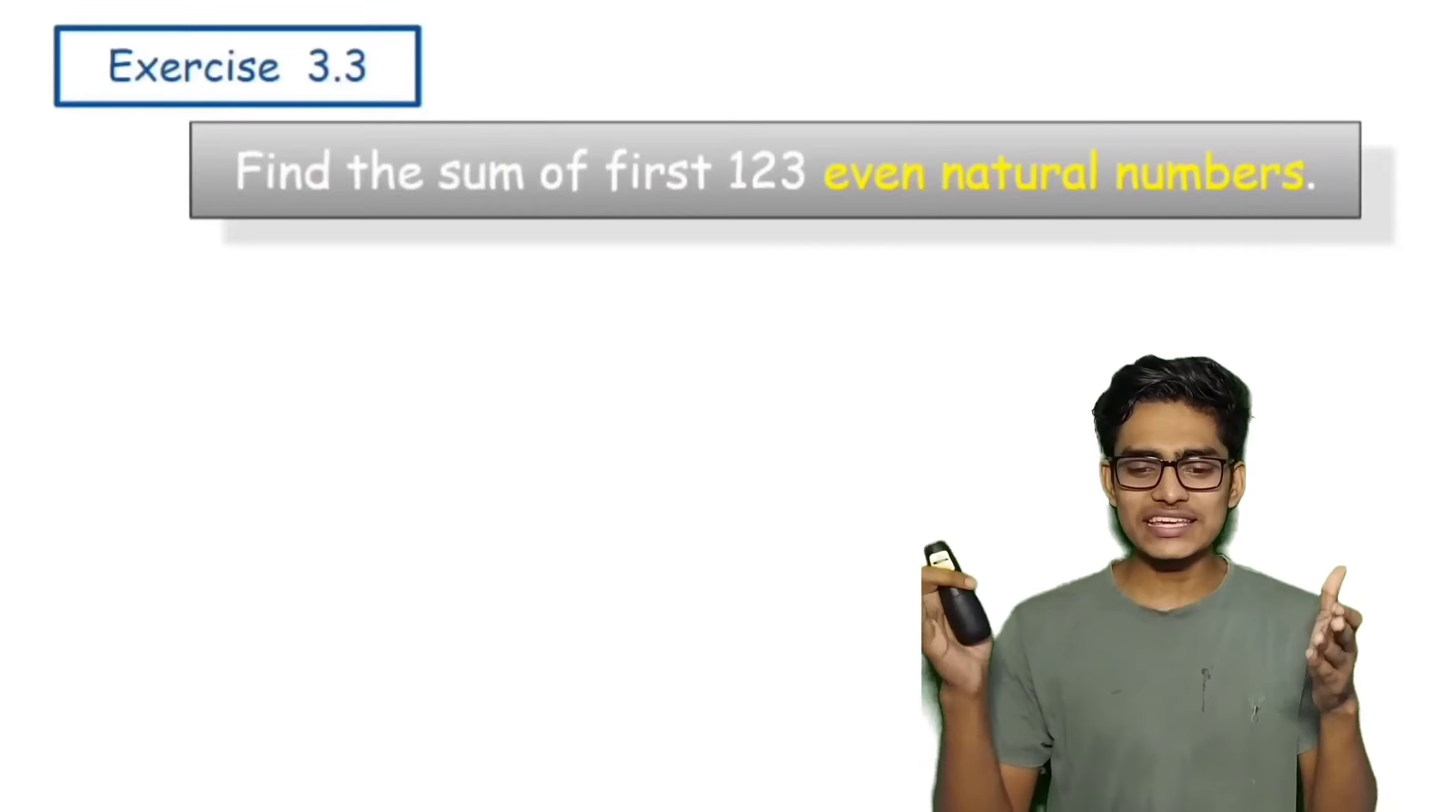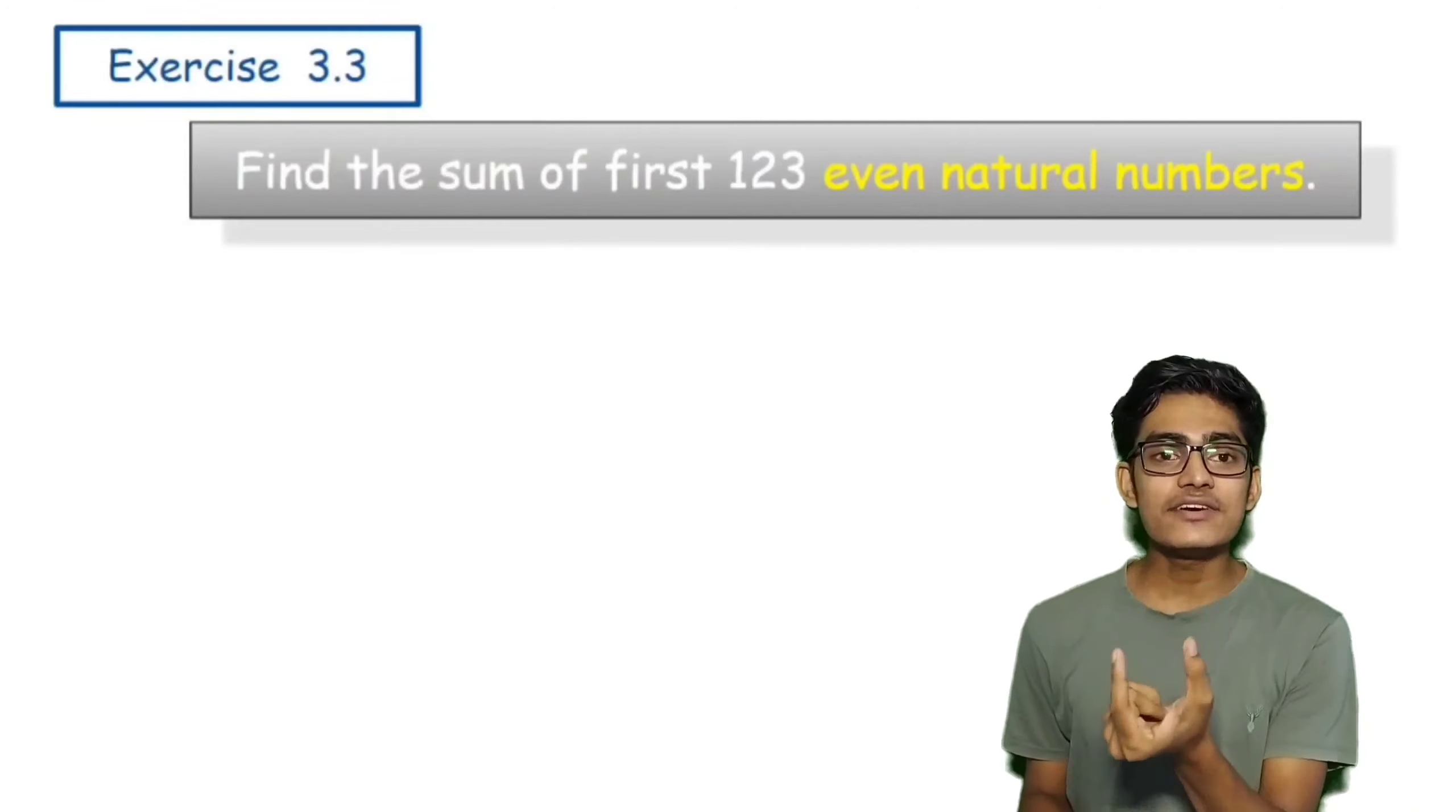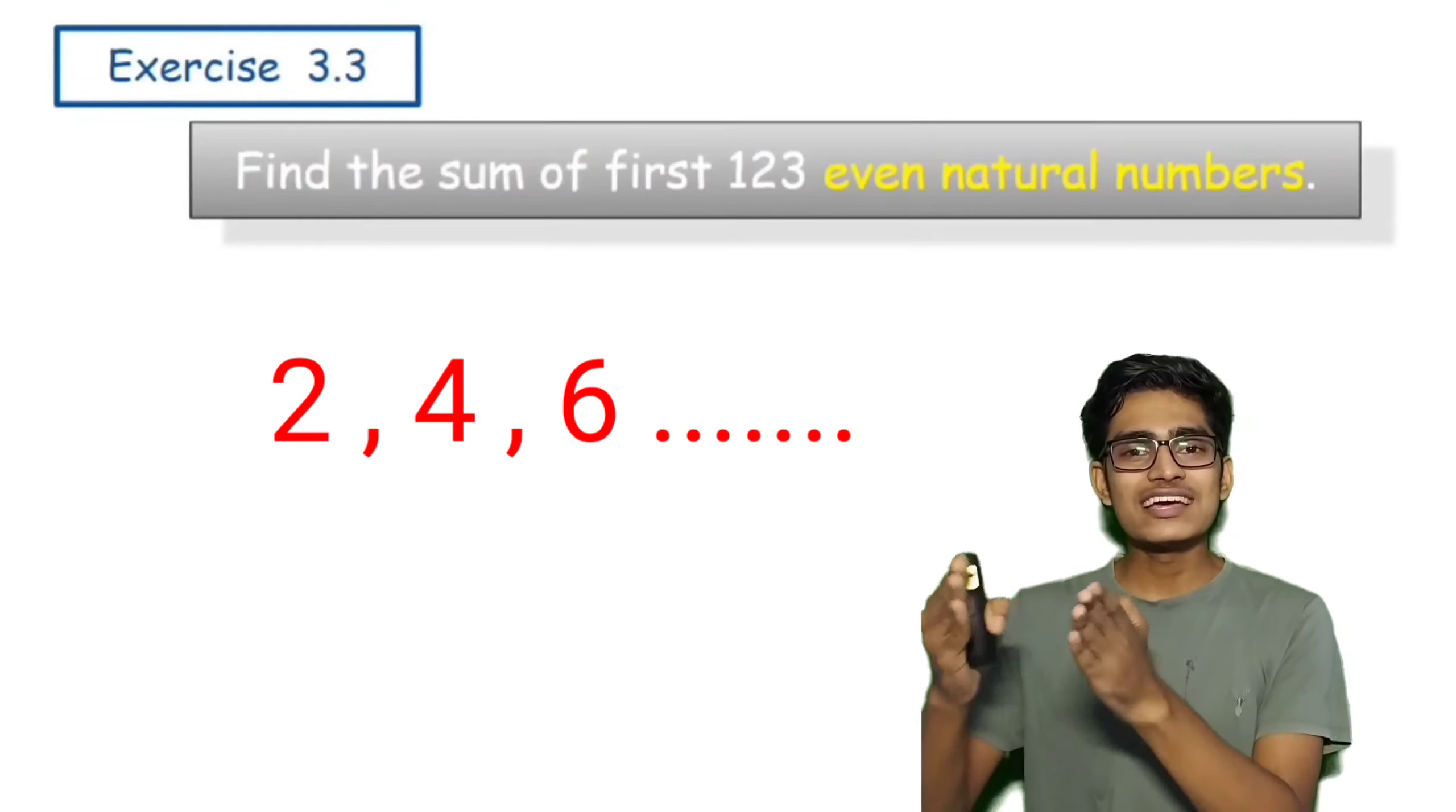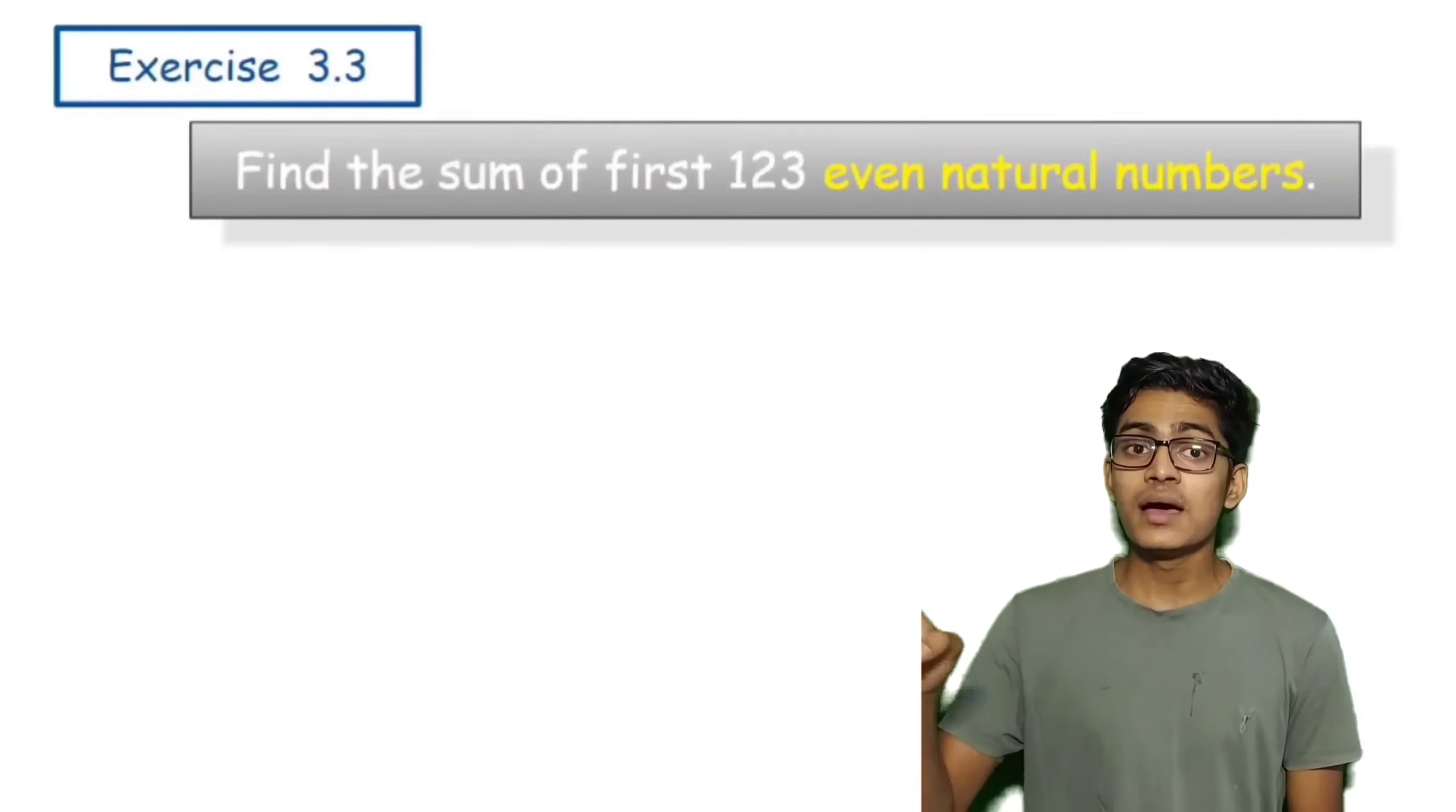the sum of first 123 even natural numbers. 123 even natural numbers start hota hai 2 se, so 2, 4, 6, aisa hum loko series jayega and kitne number talak - n wala jo position hai, jo term hai nth term that is 123. T123 talak hum loko dhoondhne ka hai, but of course not the term but the sum.